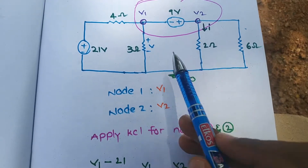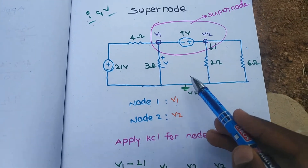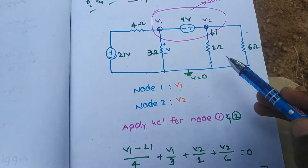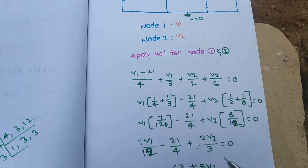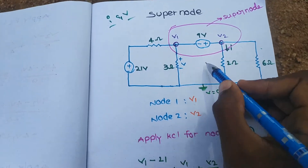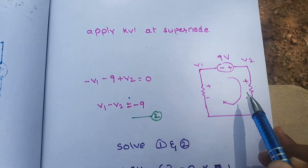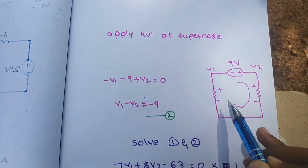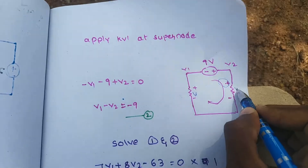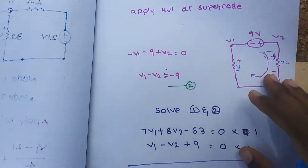We are going to apply KVL. We are going to apply KVL and add the two equations. After the second equation, we apply KVL. This is the resulting equation. The second equation is 1 and 2, and the second equation is solved.